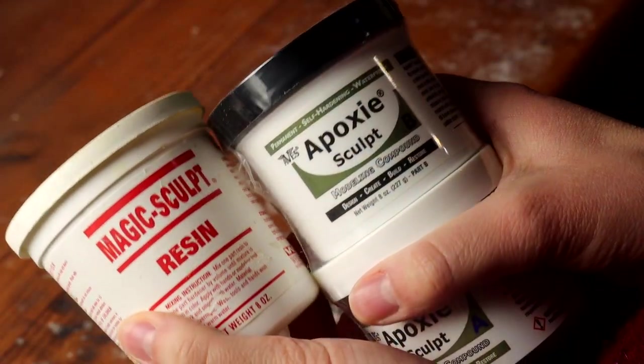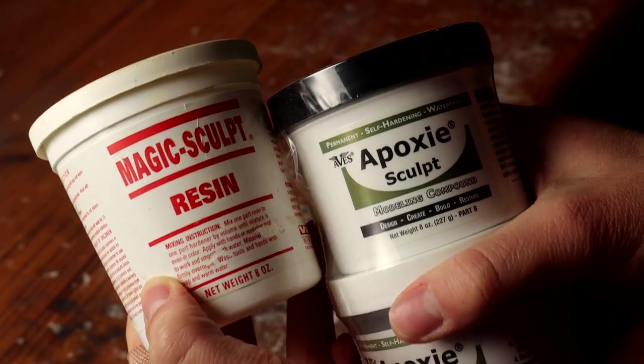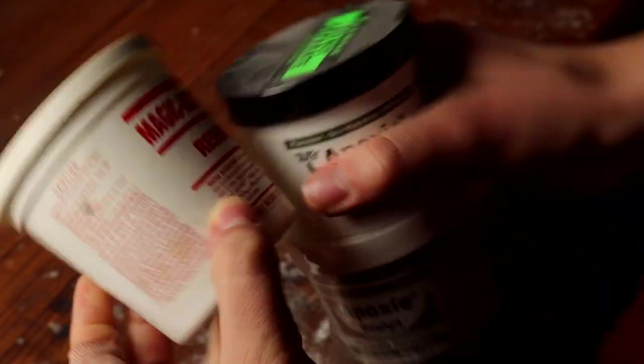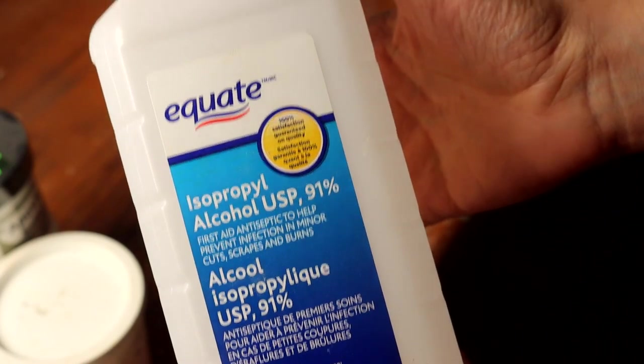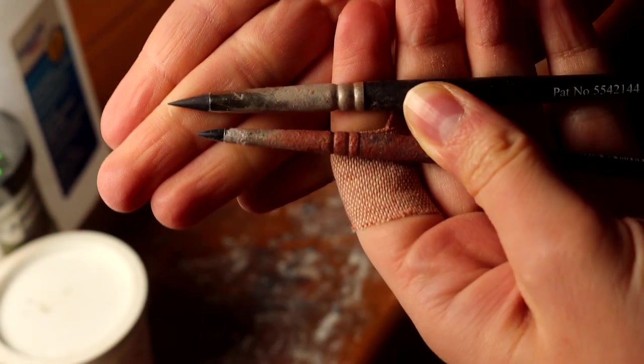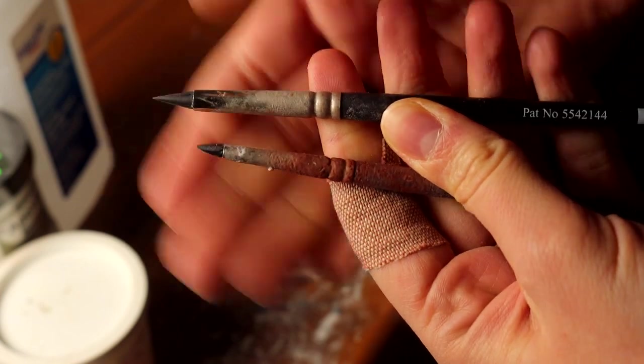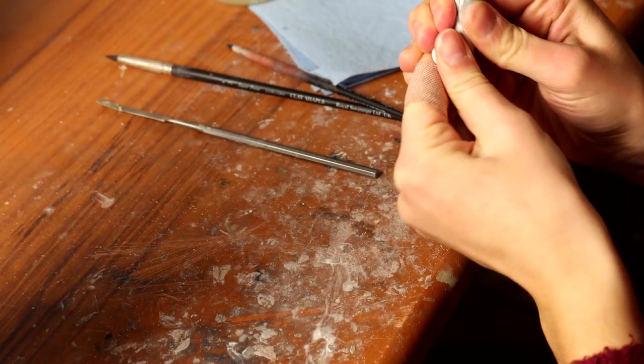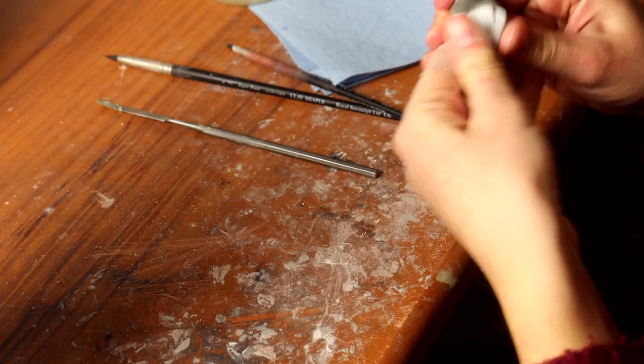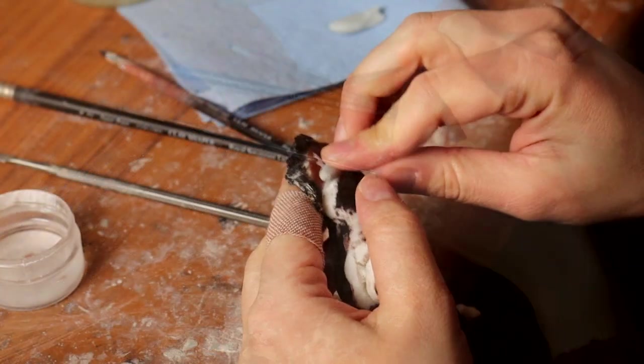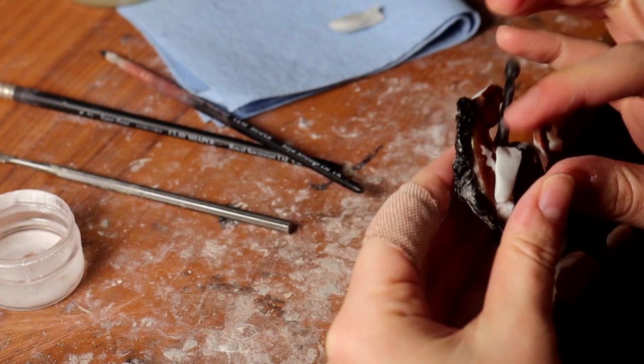You can use any kind of two part resin based clay. I have used epoxy and magic sculpt before. You're going to need some isopropyl alcohol, the higher the percentage the better, and some silicone sculpting tools. I like these individual ones that I bought from a Canadian online art store but you can find them on Amazon as well. You mix up parts of your clay here. I'll be using magic sculpt. That's my personal preference.